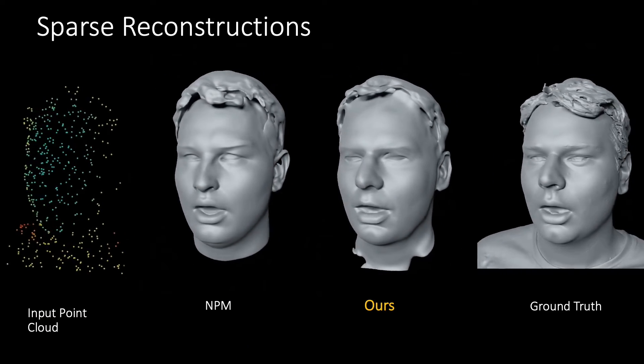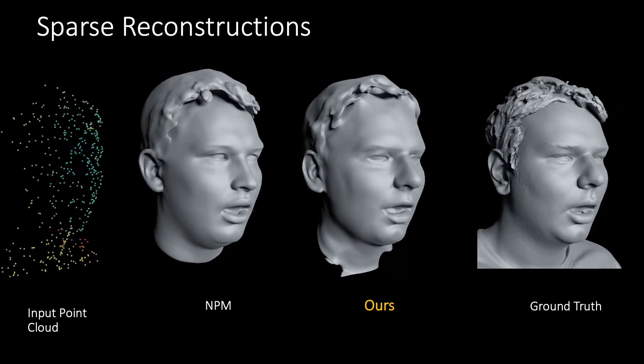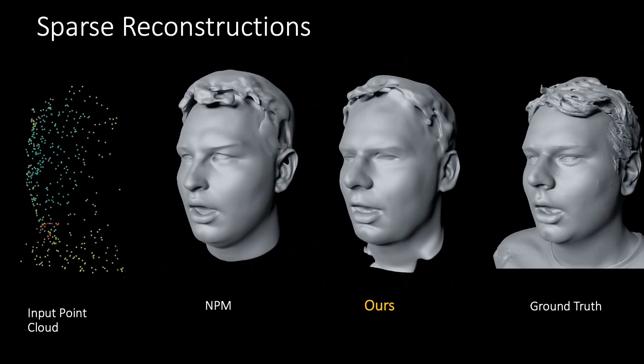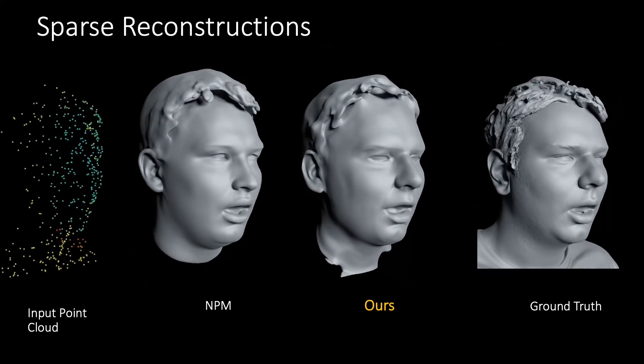We additionally demonstrate that our model can accurately reconstruct face geometry from as few as 500 points and show that our local identity representation improves reconstruction quality.